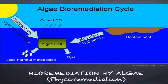Bioremediation by algae is called phycoremediation. Algae utilize metabolites, carbon dioxide and oxygen from the atmosphere, light from the sun, and water from the water body, and in this process create less harmful metabolites.